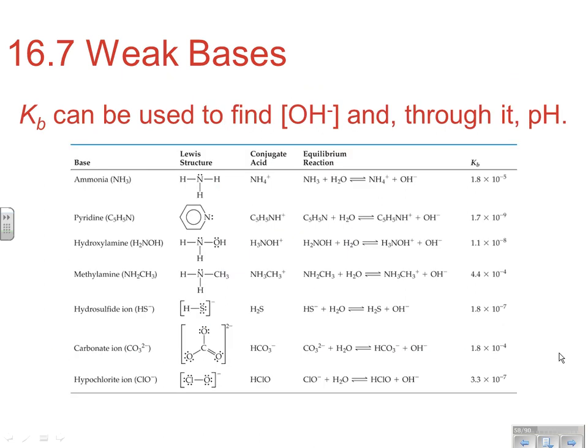Now, just like Ka can be used to find H+, which is what we looked at yesterday, KB can be used to find OH-. Remember, we don't have H+ in that equilibrium expression, we've got OH-. But remember, once we know OH-, we can use that to find pOH or H3O+, and from there we can get pH. And just like yesterday, we talked about the larger the value of Ka, the stronger the acid was. Same thing with respect to bases. The larger the value of KB, the stronger the base would be.